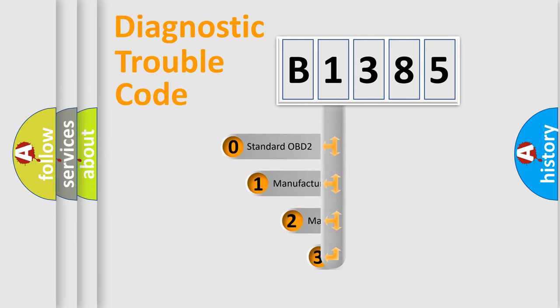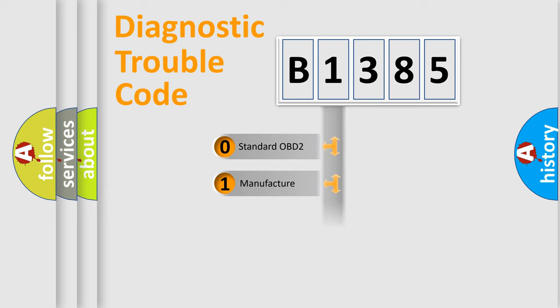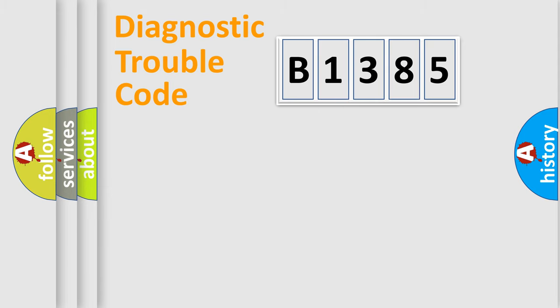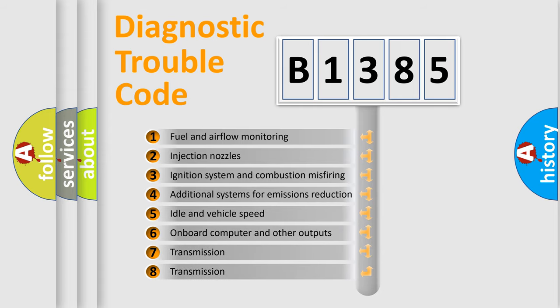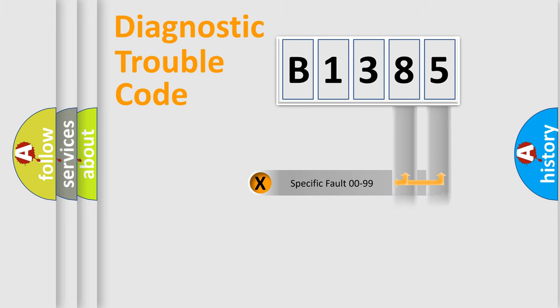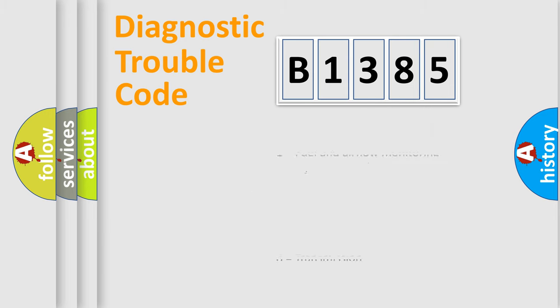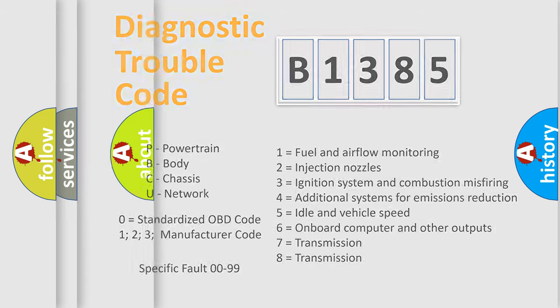This distribution is defined in the first character of the code. If the second character is expressed as zero, it is a standardized error. In the case of numbers 1, 2, or 3, it is a more manufacturer-specific expression of a car-specific error. The third character specifies a subset of errors, and this distribution is valid only for the standardized DTC code. Only the last two characters define the specific fault of the group — but only when the second character is zero.